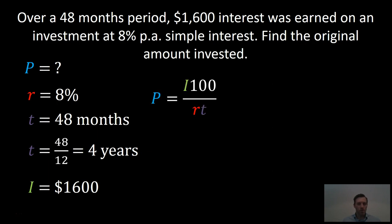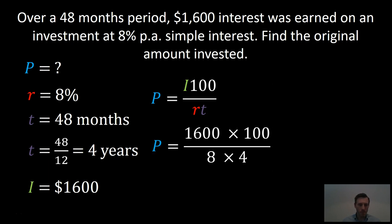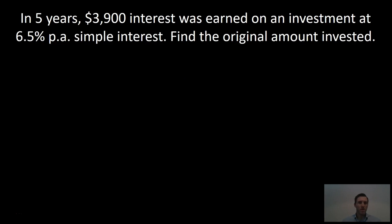We previously derived the formula for finding the principal, which is the interest times 100 divided by the interest rate times the time. We substitute those values into our formula, and we find the original amount invested would have been $5,000. Here we have another example. In five years, $3,900 interest was earned on an investment at 6.5% per annum simple interest. Find the original amount invested. Again, we're looking for P, which is the principal.